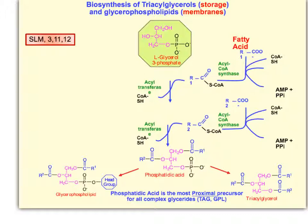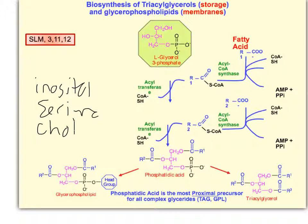Phosphatidic acid can either be used to make triacylglycerol or glycerol phospholipid by adding one of several head groups to the phosphate. These head groups include things like inositol, serine, or choline, among several others.